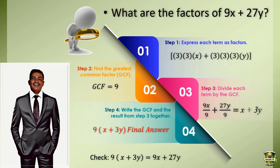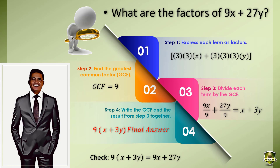I hope you followed what we did with our first problem. Next: what are the factors of 9x plus 27y? Step 1, express each term as factors: 3 times 3 times x, plus 3 times 3 times 3 times y. Step 2, there are 2 prime factors common between each term — that is 3 and 3 — so multiplying both gives us 9, and that will be our GCF. Step 3, divide each term by the GCF of 9: 9x divided by 9 plus 27y divided by 9 equals x plus 3y. Lastly, combine the GCF and the result: 9 times the quantity x plus 3y — our final answer.